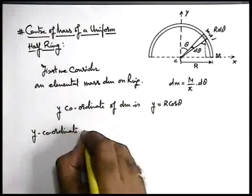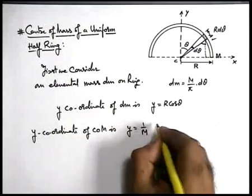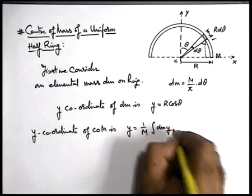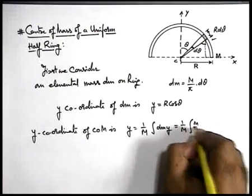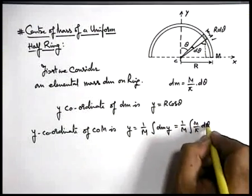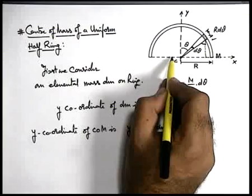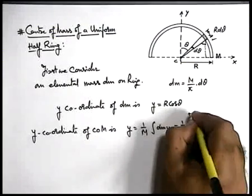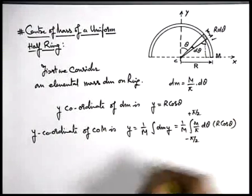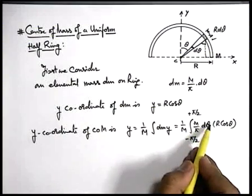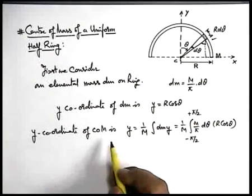y-coordinate of center of mass is given by the relation we have already studied: 1/m times the integration of dm·y. In this situation if we substitute the values it is 1/m integration of (m/π)d-theta. Here we need to substitute the limits of theta from -π/2 to +π/2, and this y-coordinate we can write as r cos theta. Because we are integrating in terms of theta, we substitute the limits of theta such that the whole ring will cover the limits of integration.